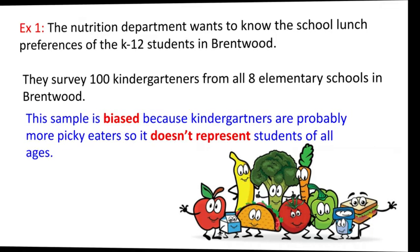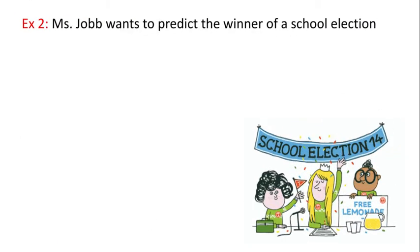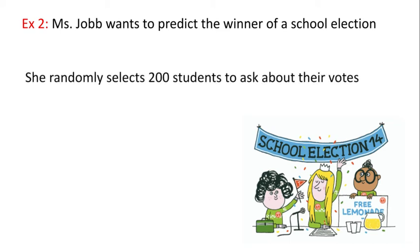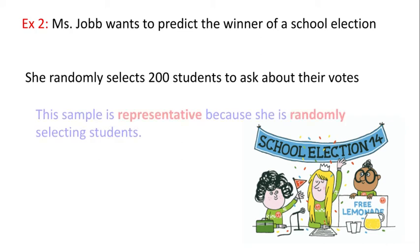Example two: Miss Jobe wants to predict the winner of a school election, so she randomly selects 200 students to ask about their votes. Pause the video — do you think it's going to be a good or bad sample? This sample is good. It's representative because she's randomly selecting students; she's not just picking one type of student.